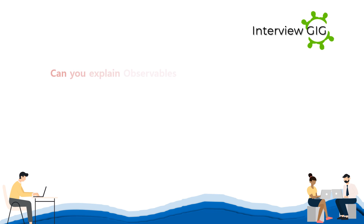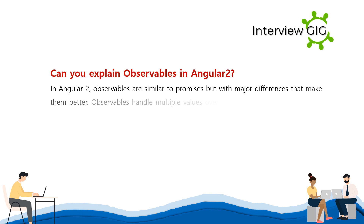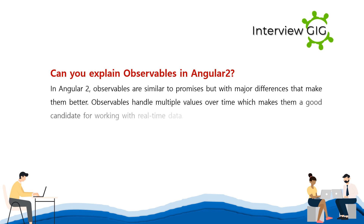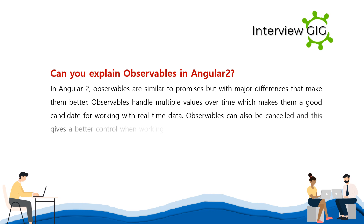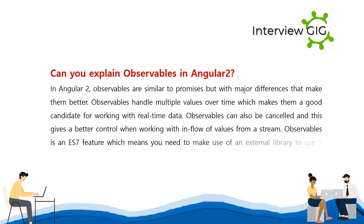Can you explain observables in Angular 2? Observables are similar to promises but with major differences that make them better. Observables handle multiple values over time, which makes them a good candidate for working with real-time data. Observables can also be cancelled, giving better control when working with an inflow of values from a stream. Observables is an ES7 feature, which means you need to make use of an external library to use it today.